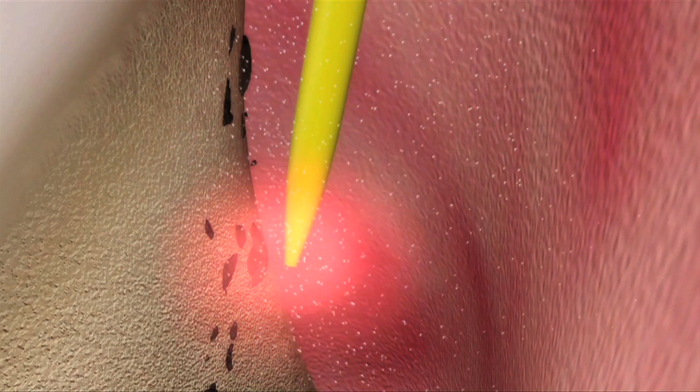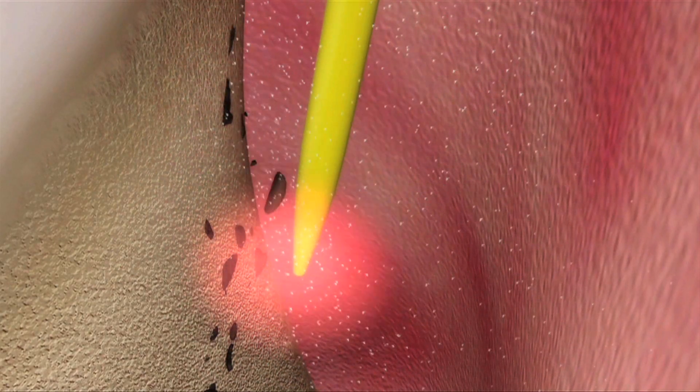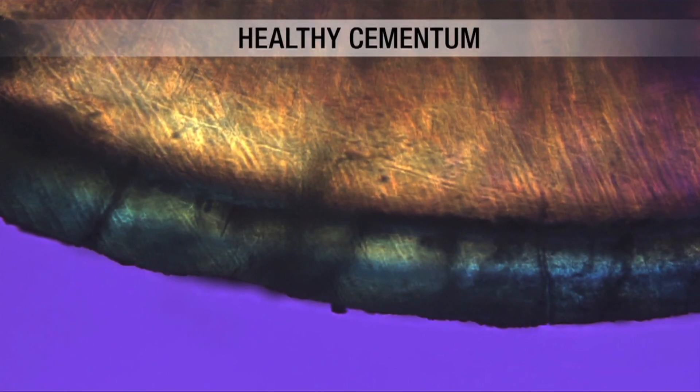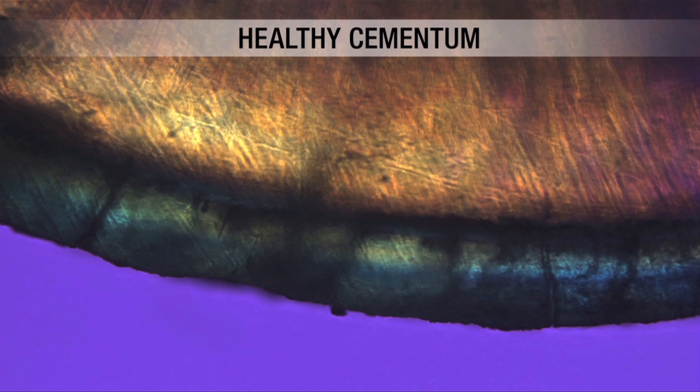Not only does this step remove calculus, it also decontaminates the root surface and removes the endotoxins that will otherwise interfere with proper healing. Finally, the Erbium YAG laser selectively removes the calculus without damaging the underlying cementum, as shown in this histology of the root surface after lasing.